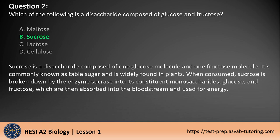The answer is B. Sucrose is a disaccharide composed of one glucose molecule and one fructose molecule. It's commonly known as table sugar and is widely found in plants. When consumed, sucrose is broken down by the enzyme sucrase into its constituent monosaccharides, glucose and fructose, which are then absorbed into the bloodstream and used for energy.